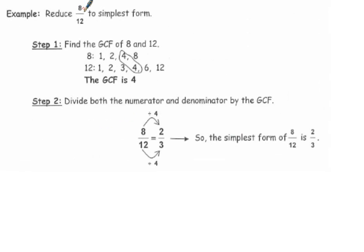For example, reduce 8 twelfths to simplest form. Step 1, find the GCF of 8 and 12. List your factors of 8, list your factors of 12, and their greatest common factor is 4. So you use that 4 and you divide both the numerator and the denominator by the GCF. 8 divided by 4 is 2. 12 divided by 4 is 3. So the simplest form of 8 twelfths is 2 thirds.